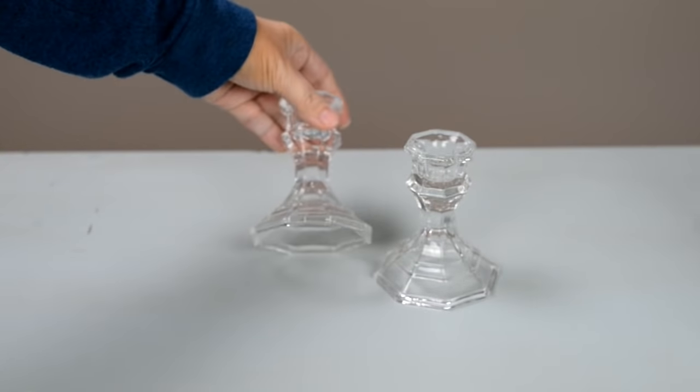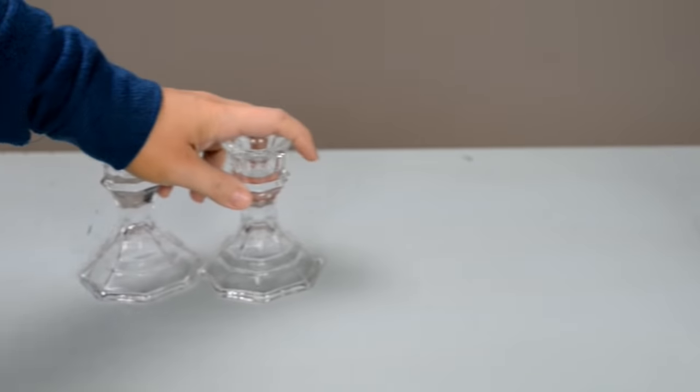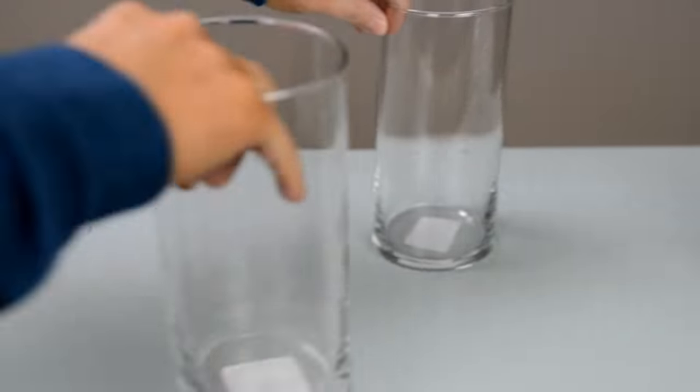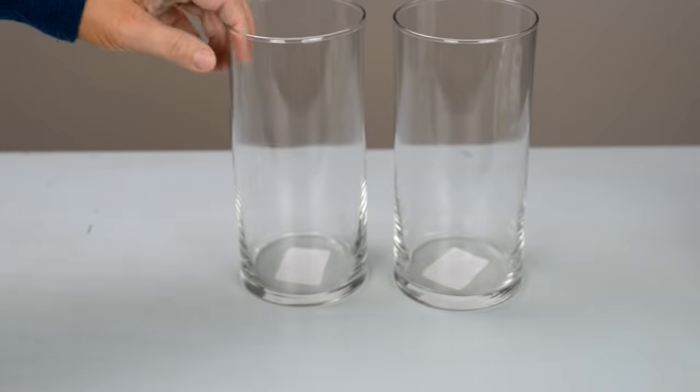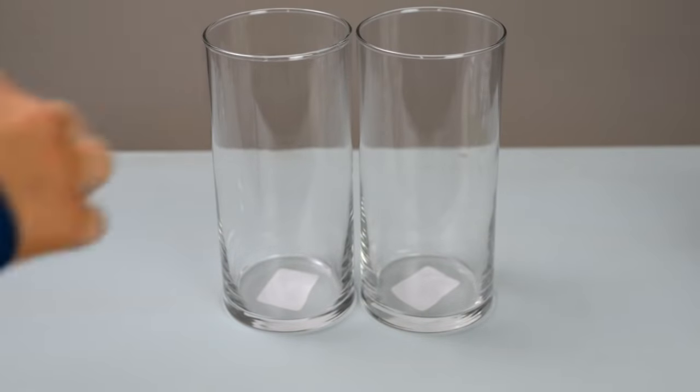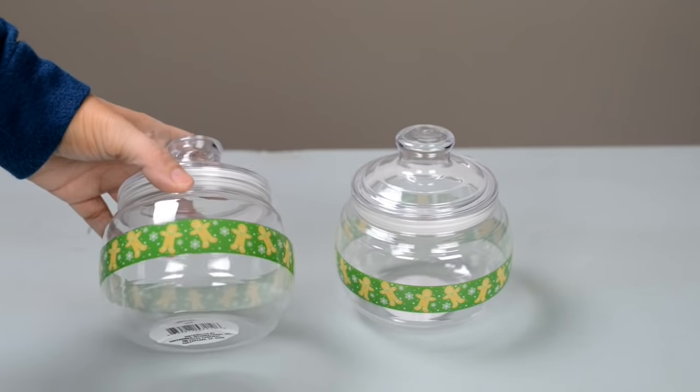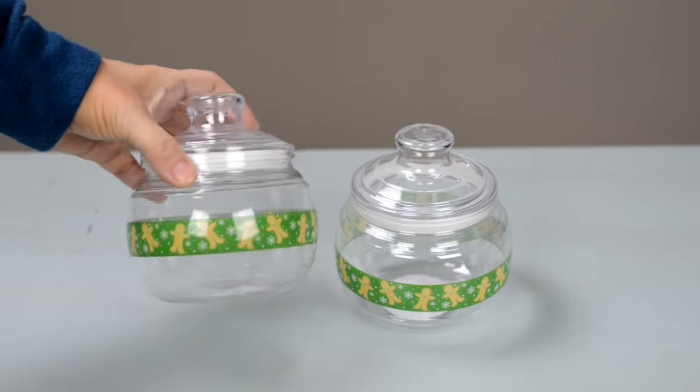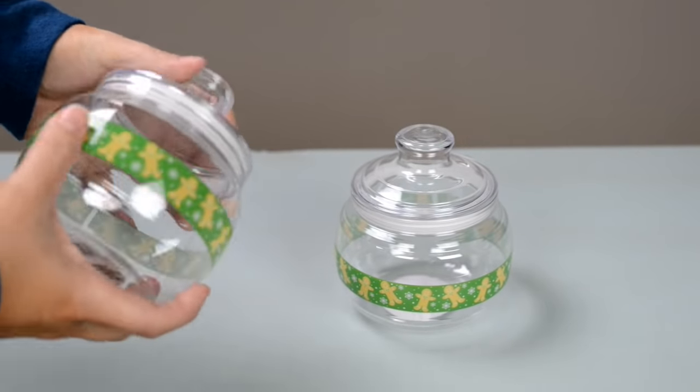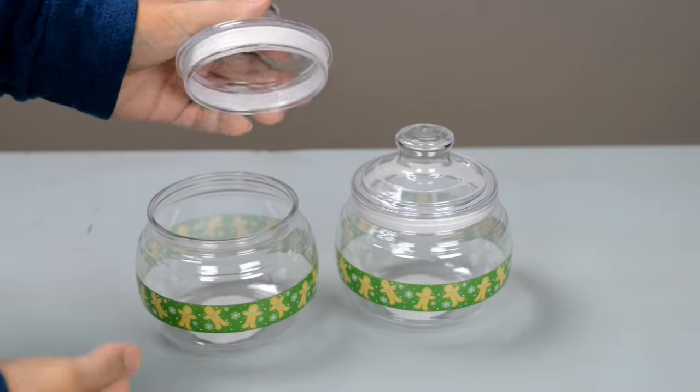The first thing we're going to make is a holder for cotton swabs and cotton pads. You're going to need two candlesticks, two of these glass containers, and some jars. I picked up these jars in the holidays section, but I'm sure they have similar ones out right now and they just have a snap-on lid.